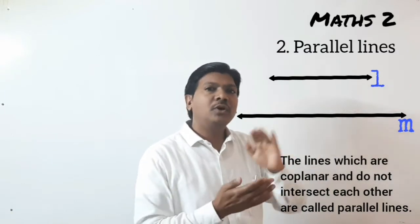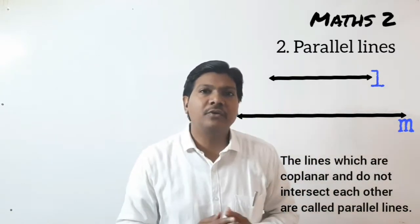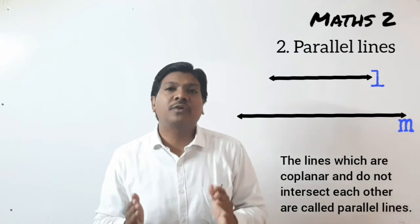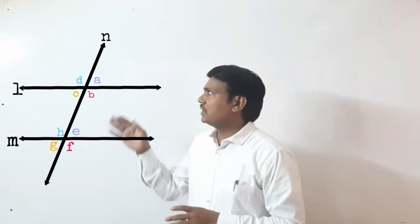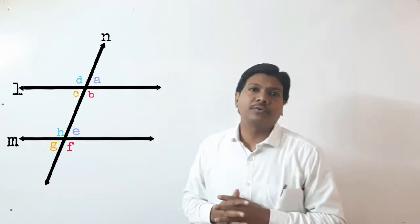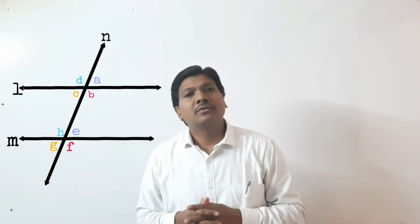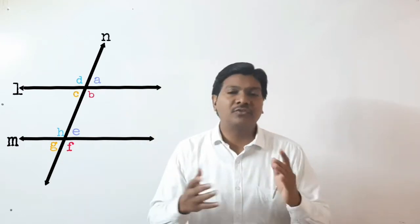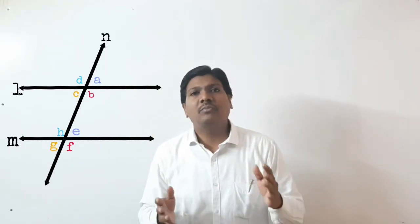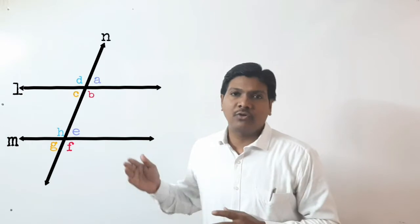Do you recall the pairs of angles formed by lines and their transversal? In this figure, line L is the transversal, and L and M are two lines.